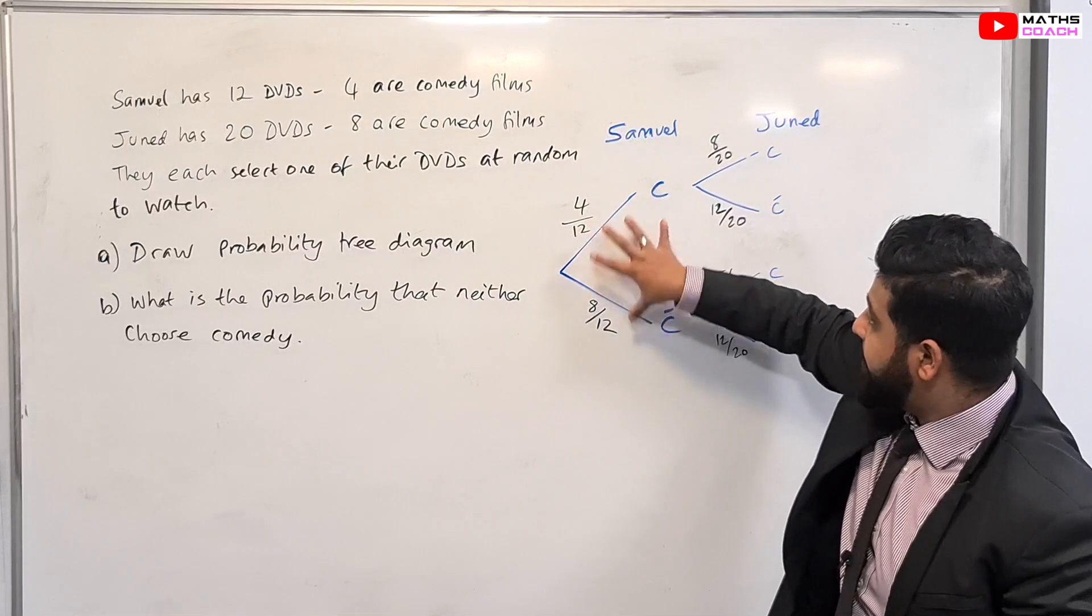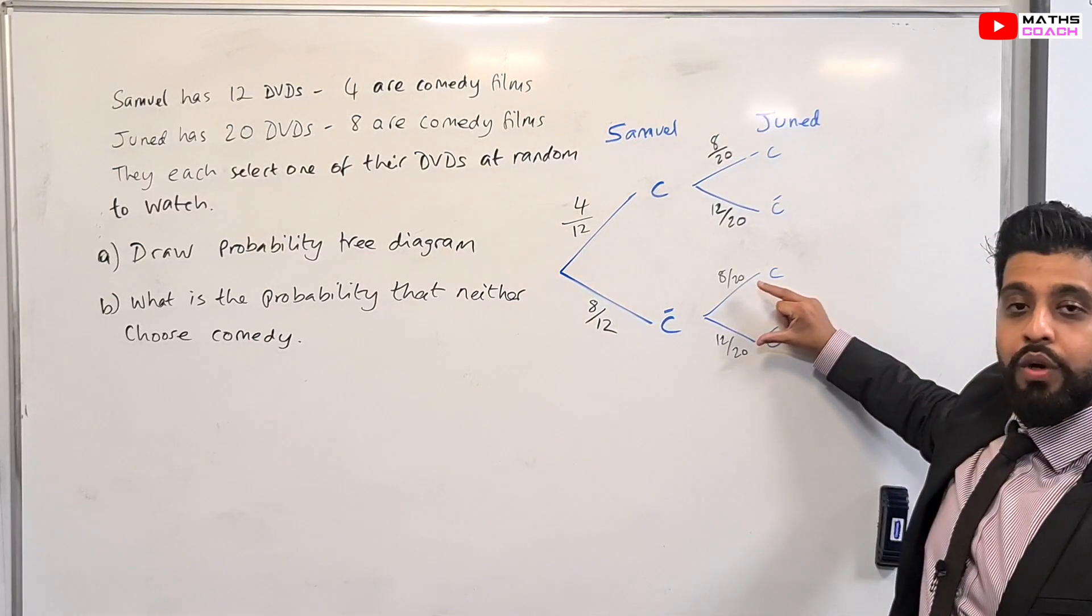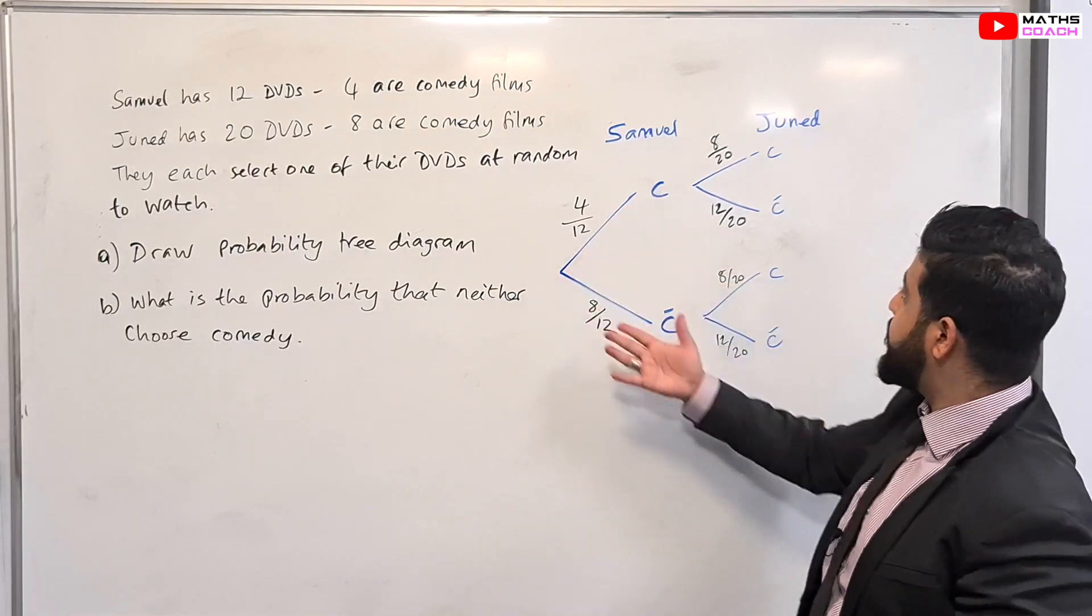So here we will also have 8 over 20 and 12 over 20. Something to know is that the branches here have to add up to one. The branches here add up to one, and they have to add up to one as well. So now we've drawn our probability tree diagram.